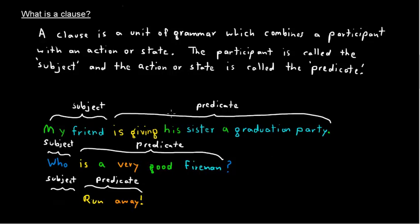Okay. So, clause combines a participant, my friend, who, which is some kind of undefined person out there, in this case, that we're trying to identify what would be some unidentified thing or idea. And U is our implied participant. That's who I'm telling to run away. That's who I mean to, that's who I mean when I say run away. Okay. And then we have an action or a state. He's giving his sister a graduation party. And action is a very good fireman, a state, or run away. Lots of action.